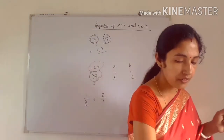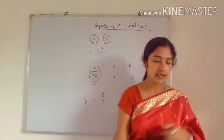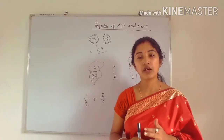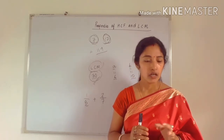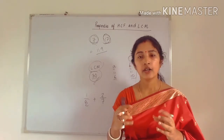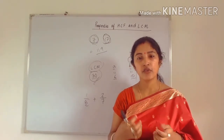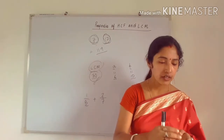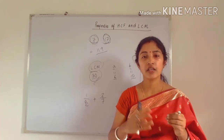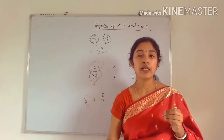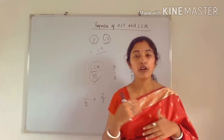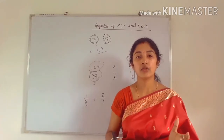Property 5: HCF is a factor of LCM. In other words, LCM is a multiple of HCF. As a task, take any two numbers, find their HCF and LCM, and you will realize that the HCF is indeed a factor of the LCM — the given condition will be satisfied.